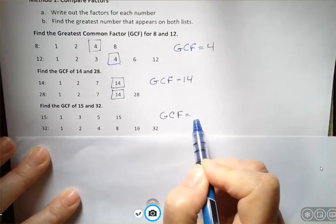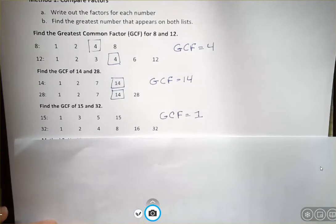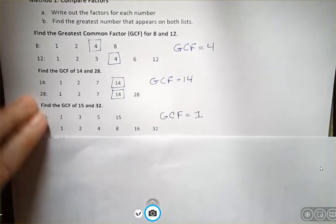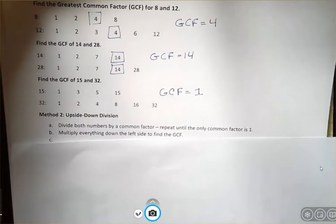So the greatest common factor here is just one. And usually when we're looking for a greatest common factor, one doesn't help us. So we would say there's nothing in common, even though they really do have a one, but usually we're hoping for something more than that.